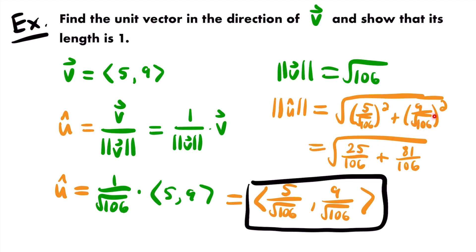In the same way, 9 squared is 81 and the square root of 106 squared is also just 106. Now we have two fractions with common denominators, so we can add their numerators together. 25 plus 81 is 106, so this is equal to the square root of 106 divided by itself. Anything divided by itself is 1, so this is just the square root of 1, which is equal to 1. The magnitude of vector u is 1, which means it is indeed a unit vector.